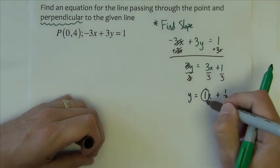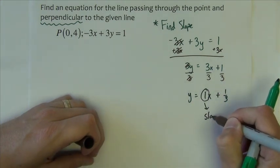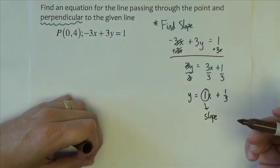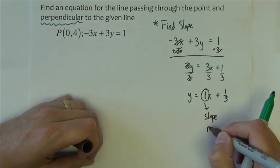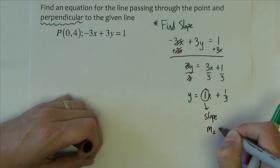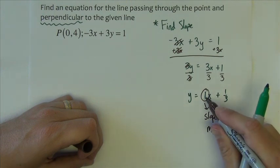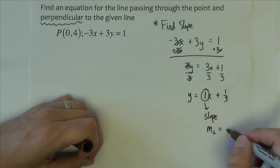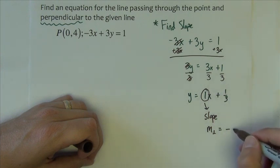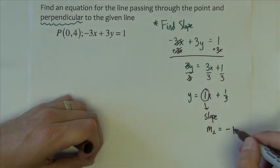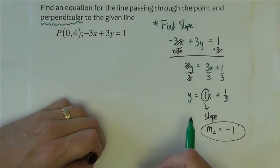This is my slope. Now I want perpendicular, so I want opposite reciprocal slope. So my perpendicular slope I want is going to be opposite sign of positive 1, which is negative 1. And I want the reciprocal of 1, which is 1. So that's the slope that I'm going to use.